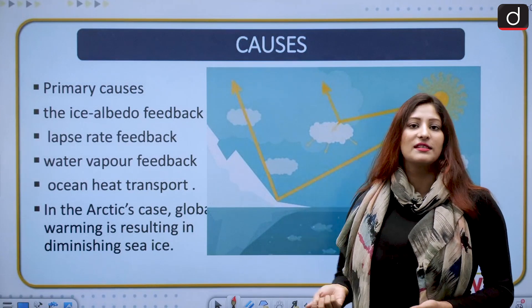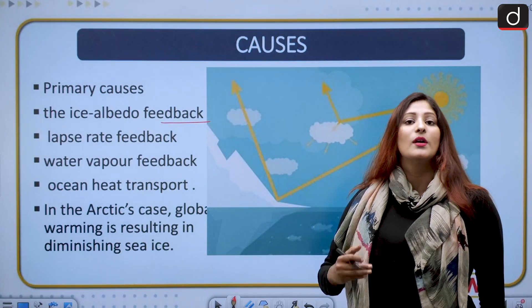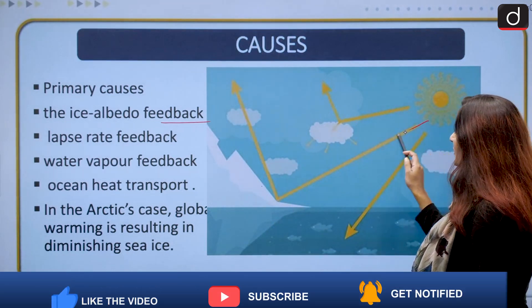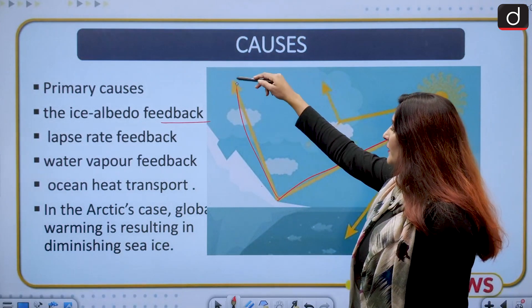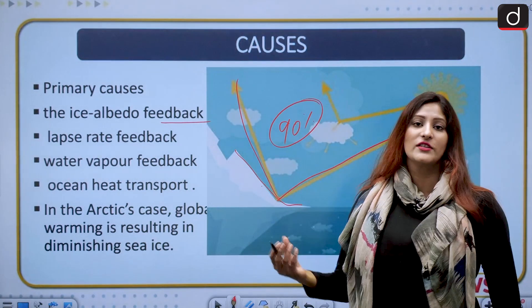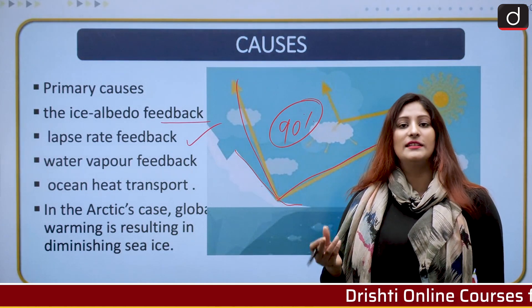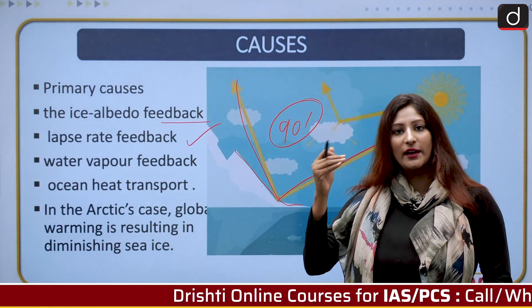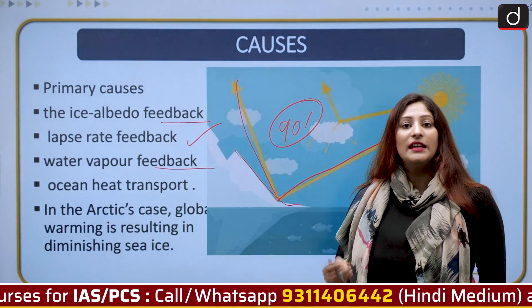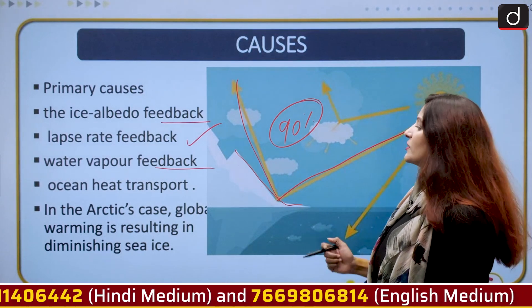The primary causes include several feedbacks. Ice albedo feedback: albedo is the capacity of a surface to reflect light back. Ice and glaciers are responsible for about 90% of Earth's albedo, so as ice melts, the Arctic Ocean absorbs more solar radiation, causing further melting. Lapse rate feedback refers to the decrease in temperature with rising altitude, which decreases with warming. Water vapor feedback is the receptivity of water vapors to temperature change. Ocean heat transport also plays a role.